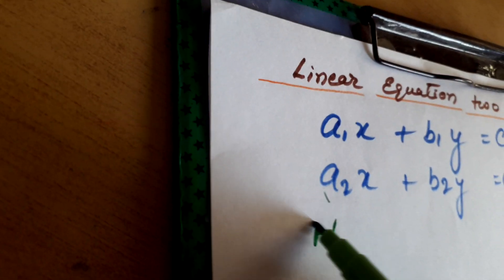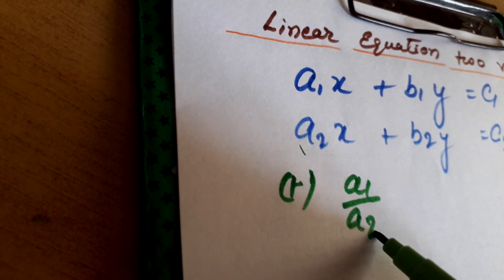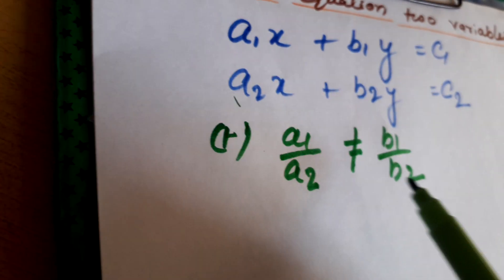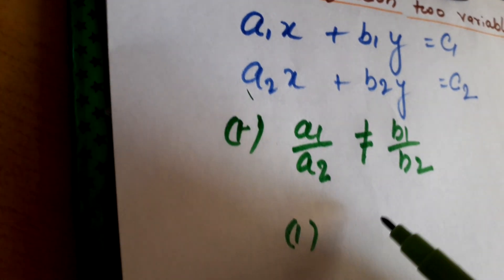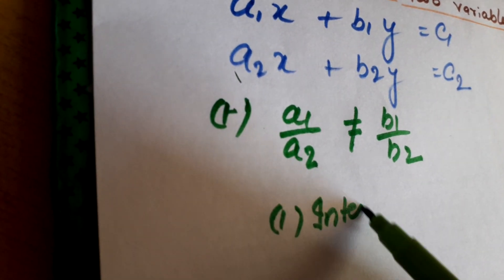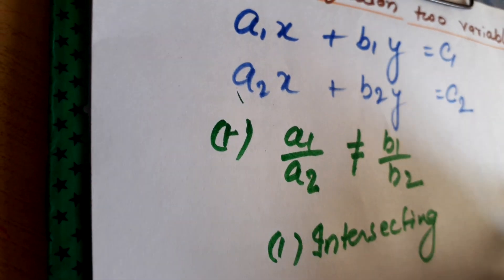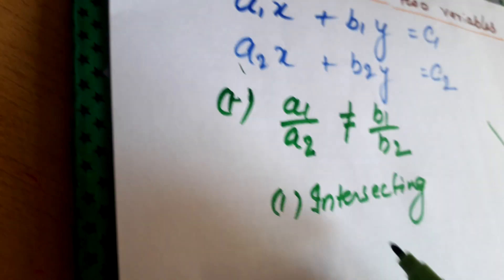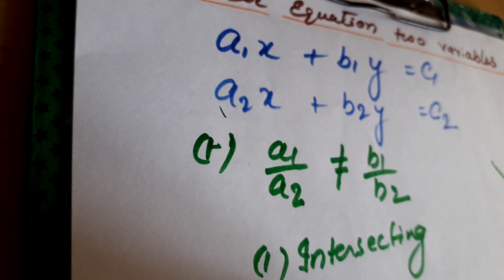The first condition: if a1 upon a2 is not equal to b1 upon b2, then the graph of these equations will be intersecting — both lines will intersect at one point. This equation will have a unique solution.